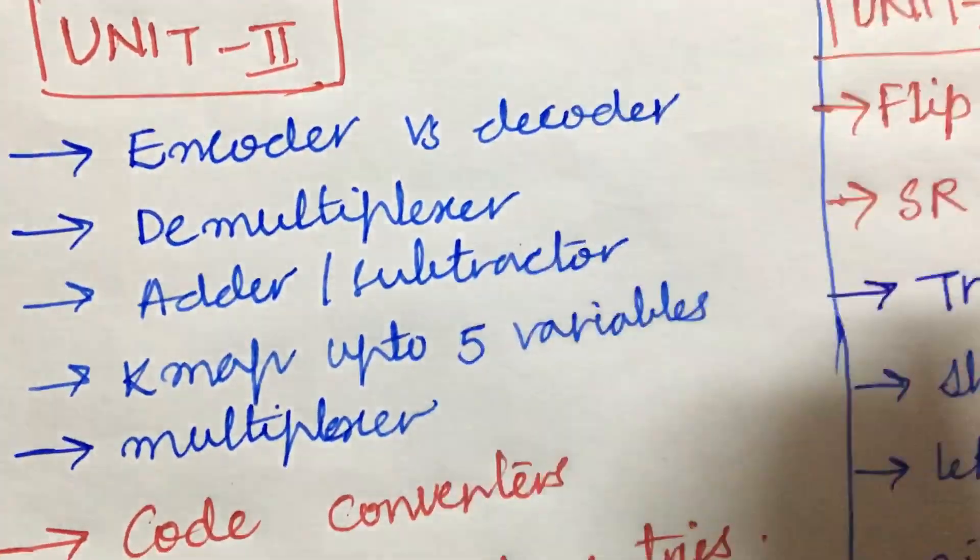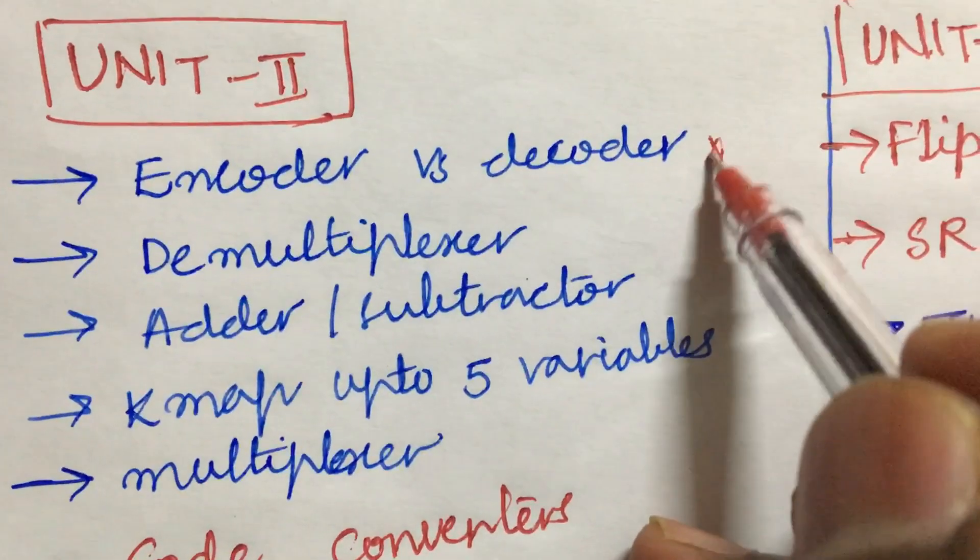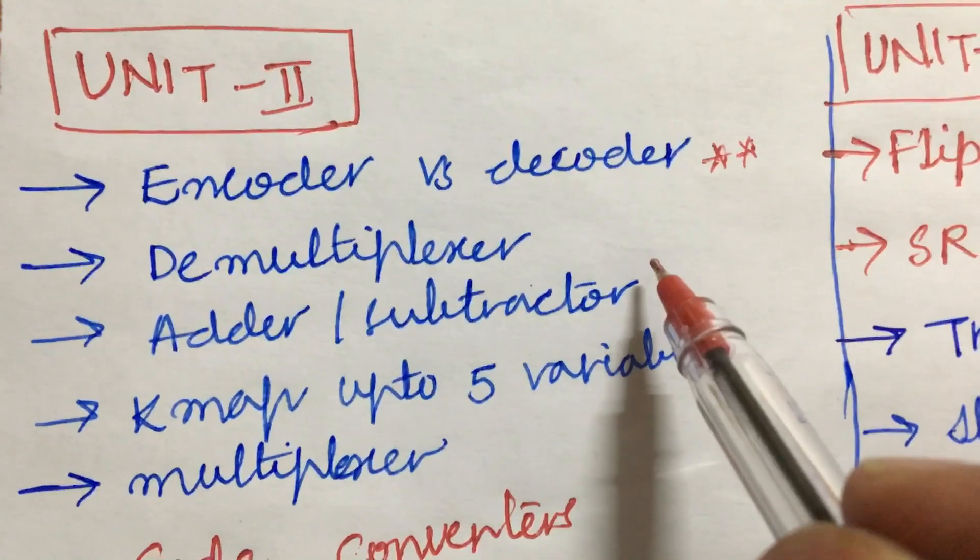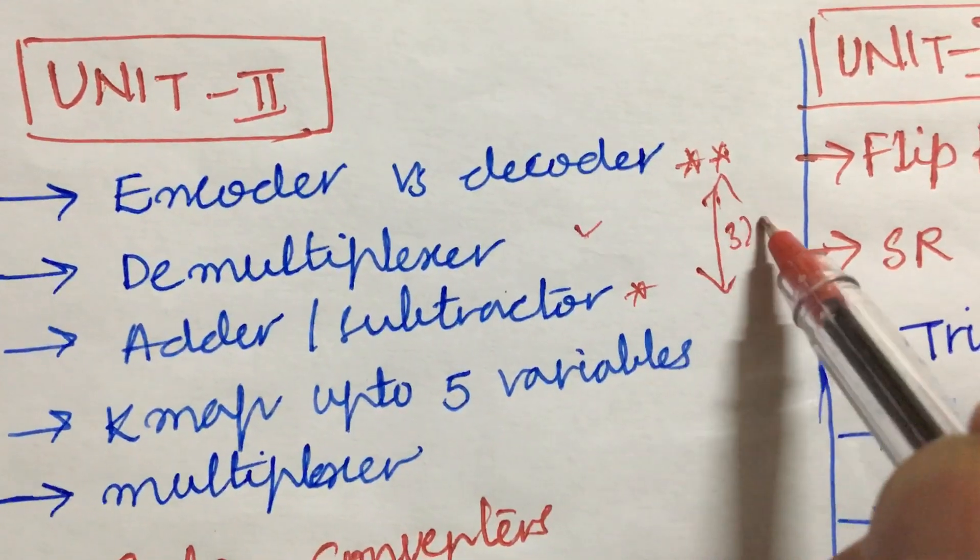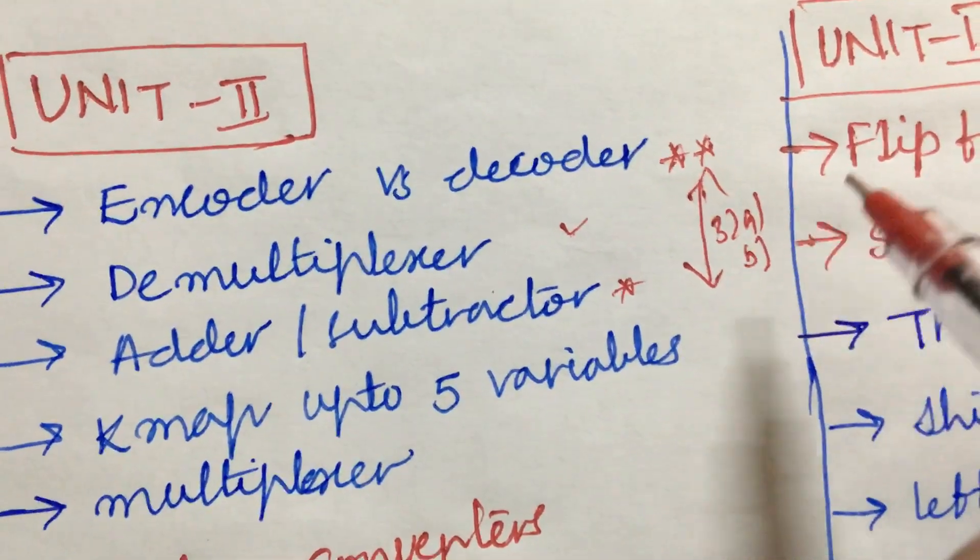Coming to the second unit, it is all about encoder versus decoder as well as demultiplexer and the adder and subtractor and the problems related to it. From this part we can expect 3A as well as 3B dear students.